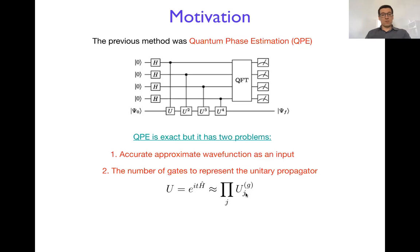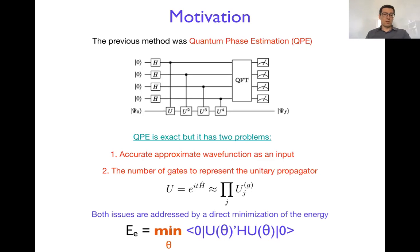In order to address, actually two of those problems, variational quantum eigensolver was suggested. And it was essentially trying to optimize the unitary transformation directly so that the energy will be minimized.